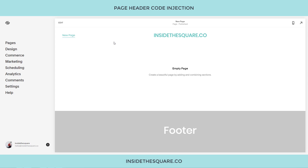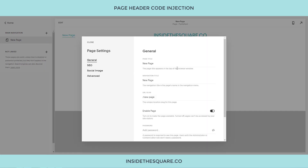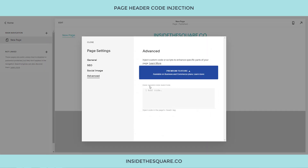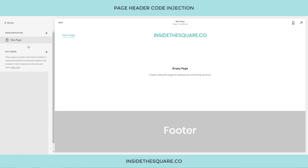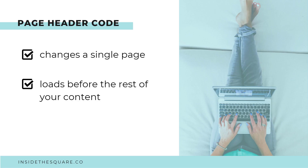You can also navigate there outside of edit mode by going to your pages menu and clicking the gear icon next to the name of the page you'd like to edit, then selecting Advanced. A pro tip: your page header code actually loads before the rest of your content, so for single-page changes, it's the best place to put custom CSS. That way, the browser already knows what style to apply to the content as soon as it loads.